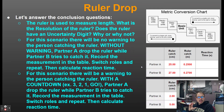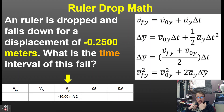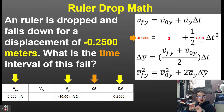Now we can calculate the reaction time. A ruler is dropped and falls for a displacement of negative 0.2500 meters. Knowing the acceleration is negative 10 m/s² and initial velocity is zero, we look for the equation with those four variables — that's the second equation. Plugging everything in and solving gives a time interval of 0.2236 seconds, which is about a quarter of a second.